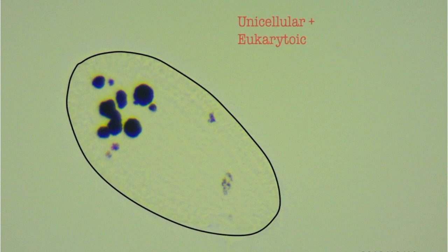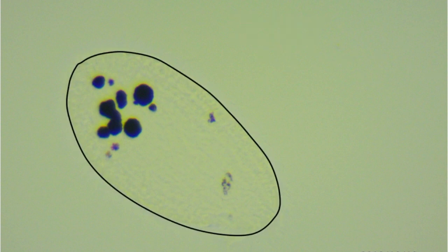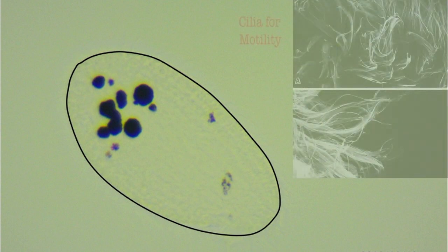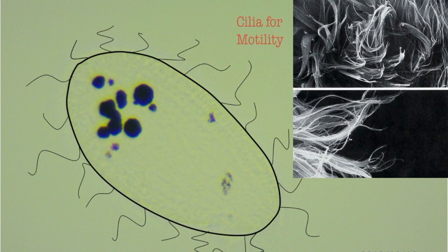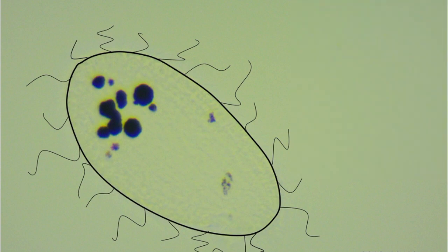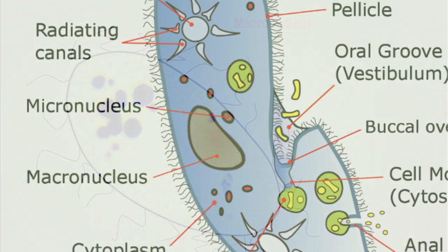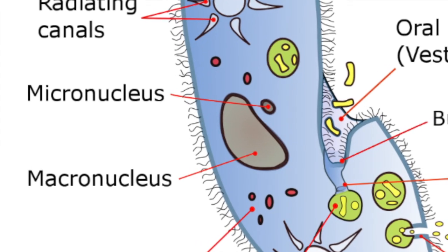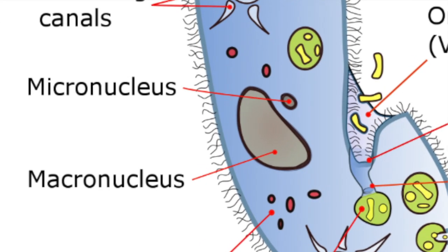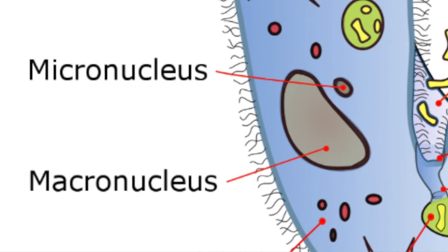Tetrahymena are unicellular and eukaryotic. They have many hair-like projections known as cilia for motility. They also show nucleodimorphism, which means they have a macronucleus for regular cell processes and a usually dormant micronucleus for the cell's germline.